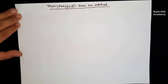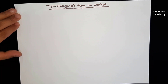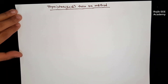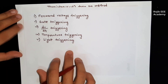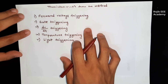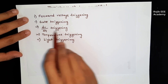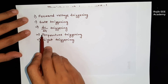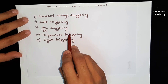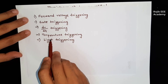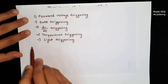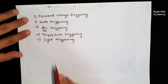Hi, I'm in the Power Electronics course. In this video, I'm going to learn about the third turn-on method. The turn-on methods are: one is the forward voltage, two is the gate, three is the dv/dt, four is the temperature, and five is the light.